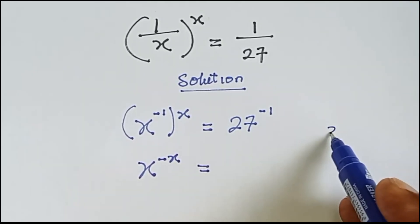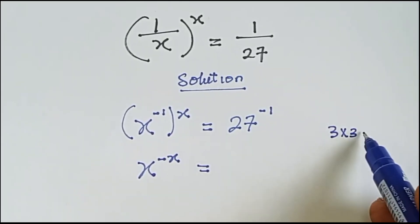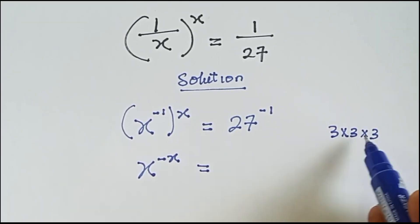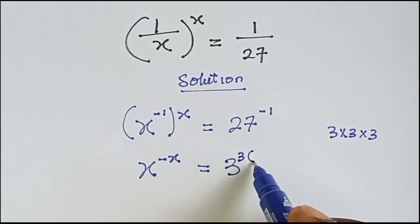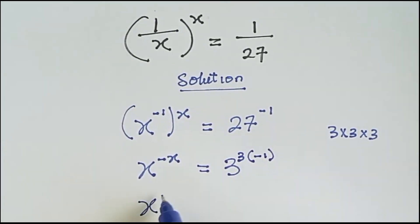It's a multiple of 3. So we have 3 times 3 is 9, 9 times 3 is 27. So 27 is 3 raised to the power 3. Then we can write this minus 1 here. So from there, we multiply the 3 and the minus 1. So we have 3 times minus 1 give us minus 3.